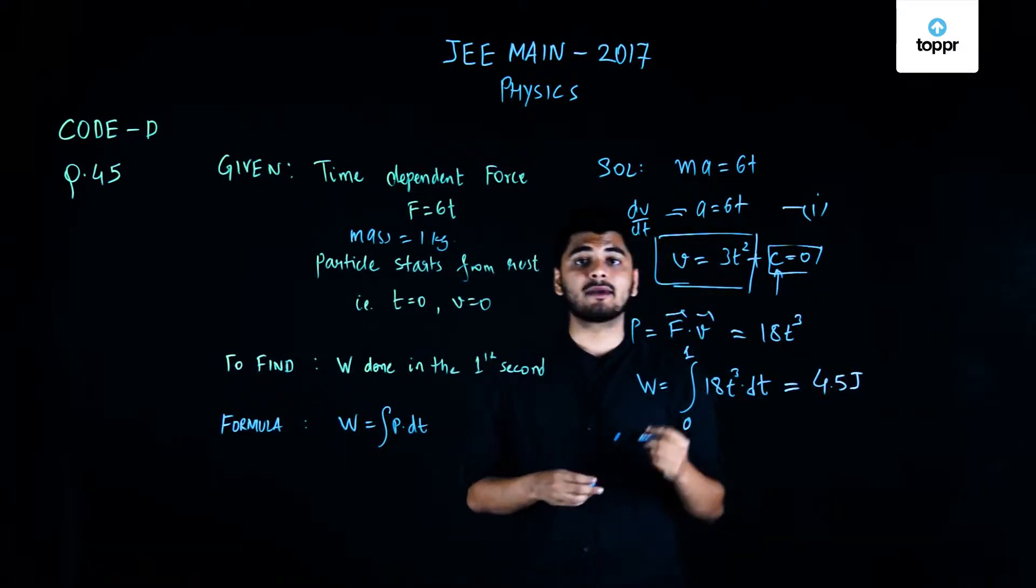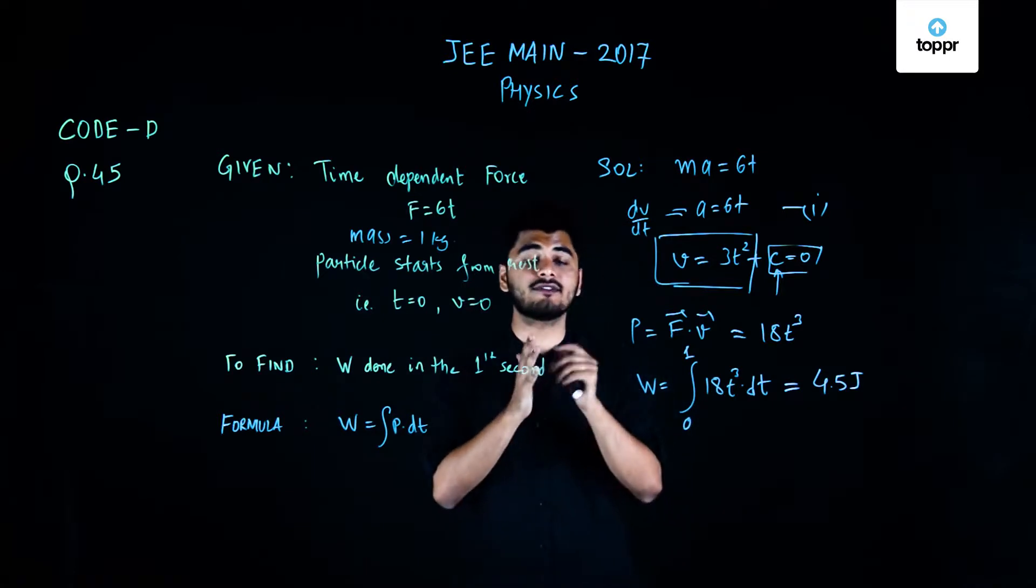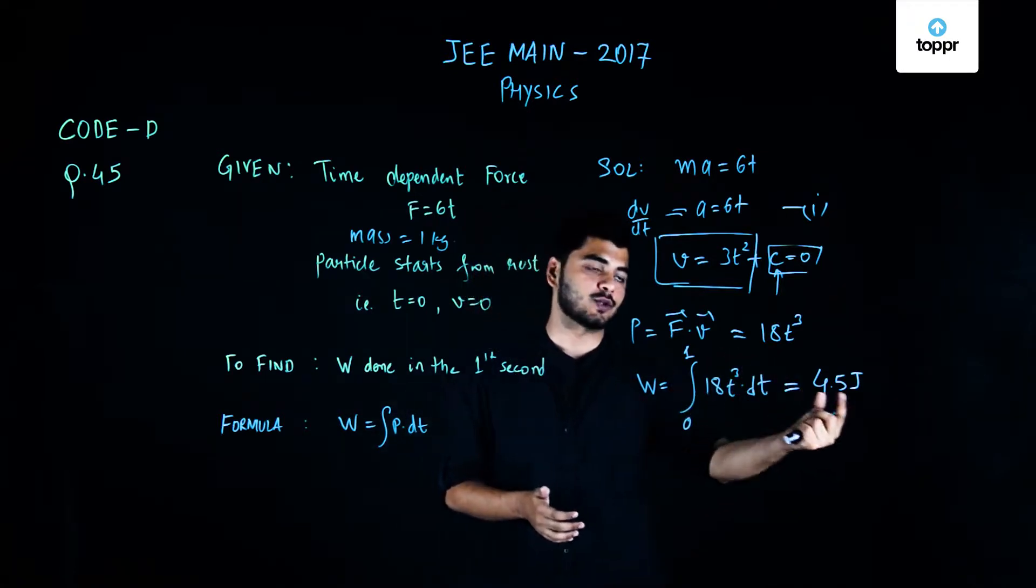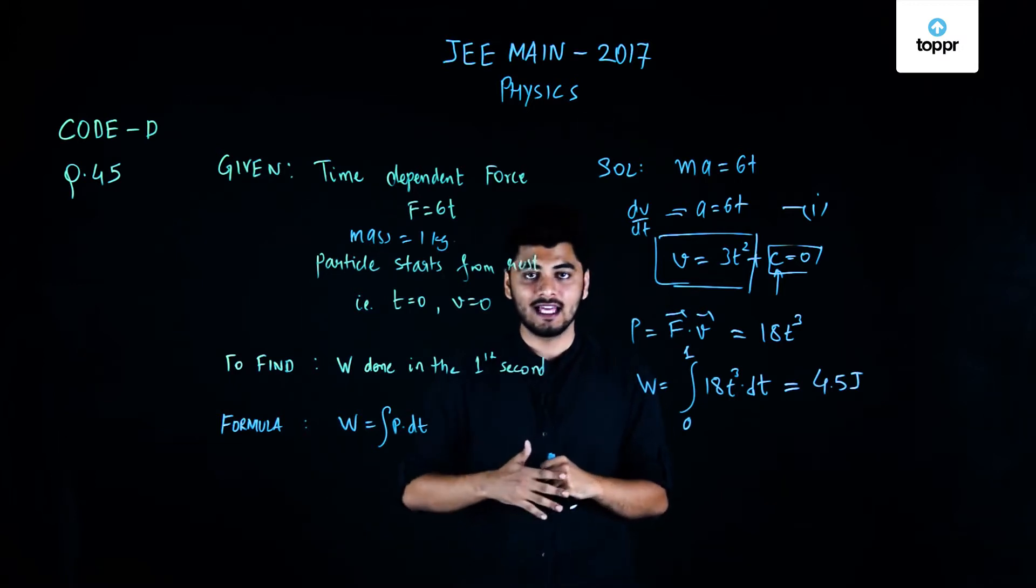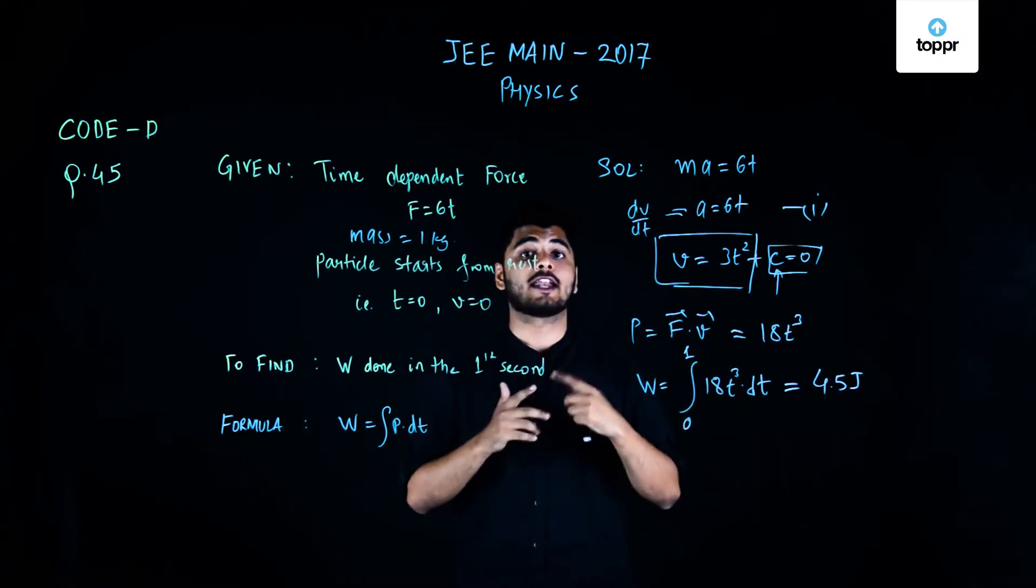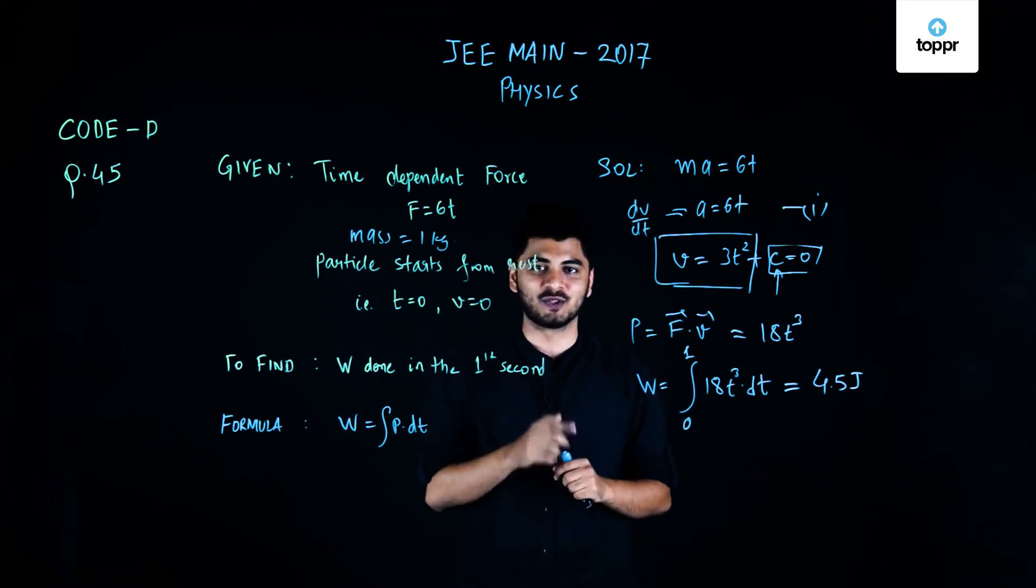So the work done by this time dependent force from t equals 0 to t equals 1 second, that is in the very first second of motion, is nothing but equals to 4.5 joules. So if you like our solution, please subscribe to our channel, and if you're really liking our solutions and you want to see more, please hang on to our channel as we're going to upload more and more video solutions very soon.